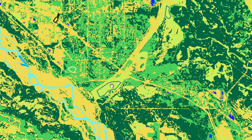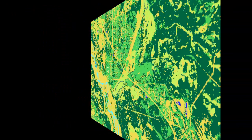We color code the classified image. For example, everything in one color is predicted to be shrub, everything in another color is predicted to be clear water, and everything in another color is predicted to be turbid water.